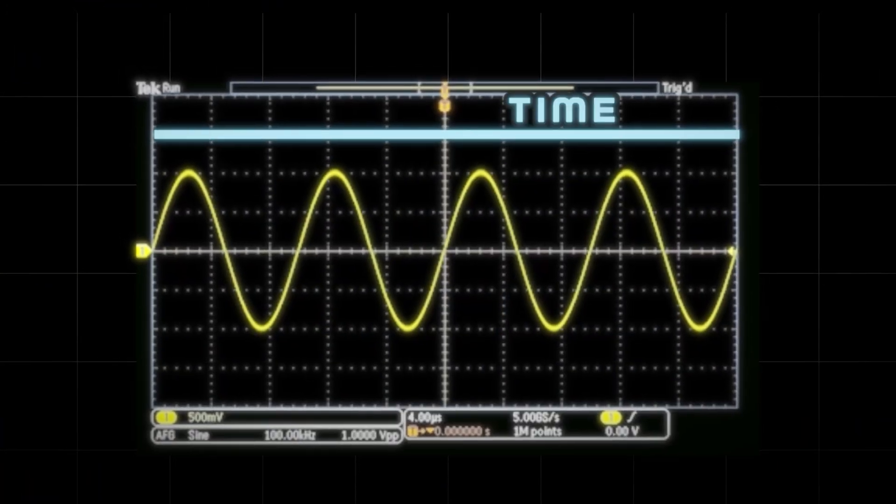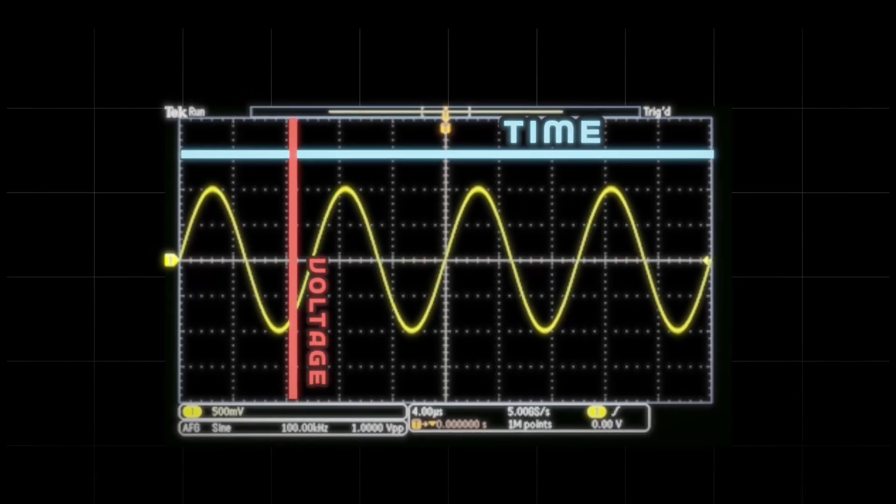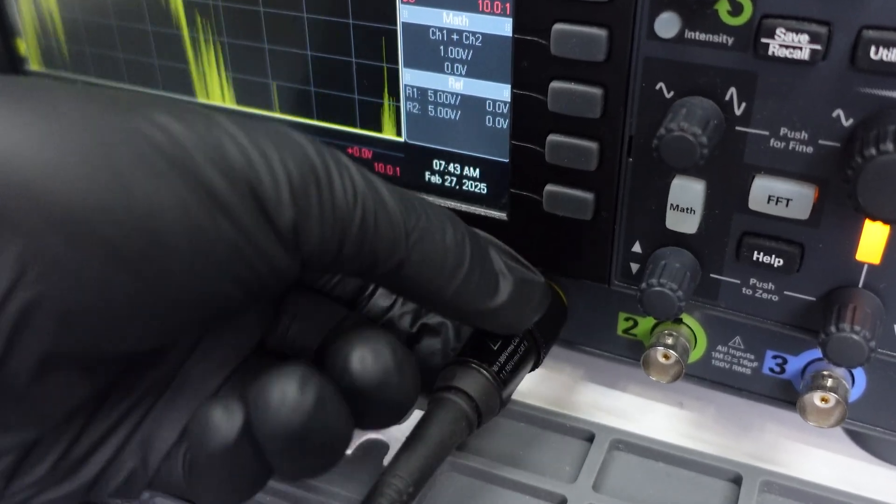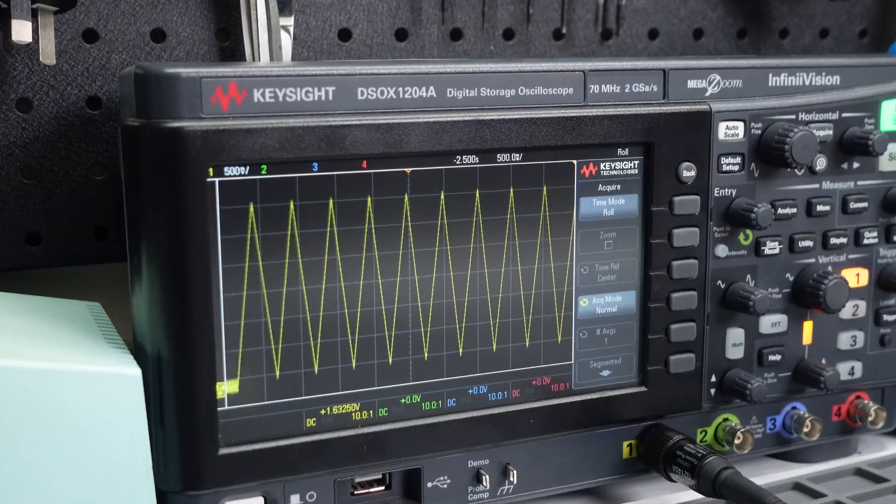The horizontal axis represents time, and the vertical axis represents voltage. So when you connect the signal, you see a waveform moving across the screen in real time.